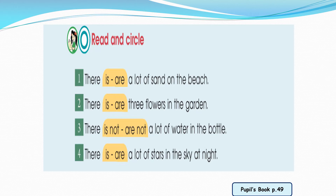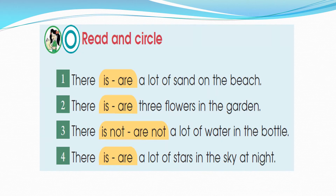Remember: 'is' is with singular and 'are' is with plural. Number 1: there is a lot of sand on the beach. Number 2: there are three flowers in the garden. Number 3: there is a lot of water in the bottle. Number 4: there are a lot of stars in the sky at night.